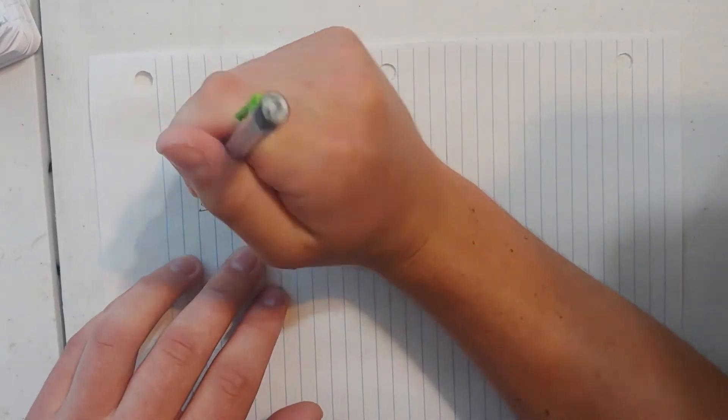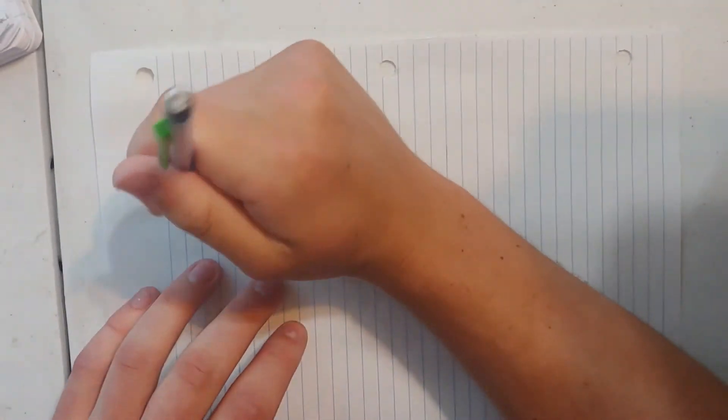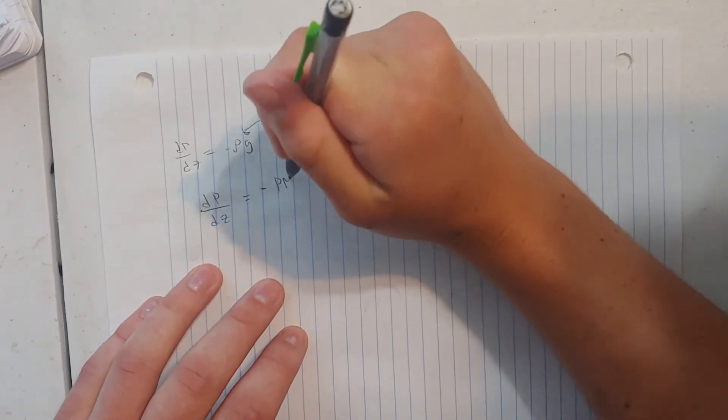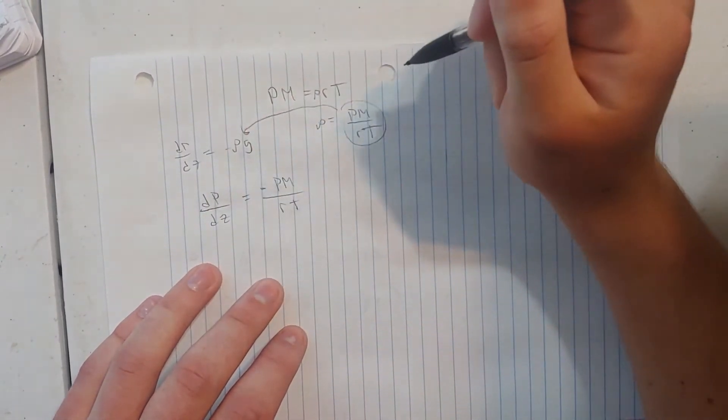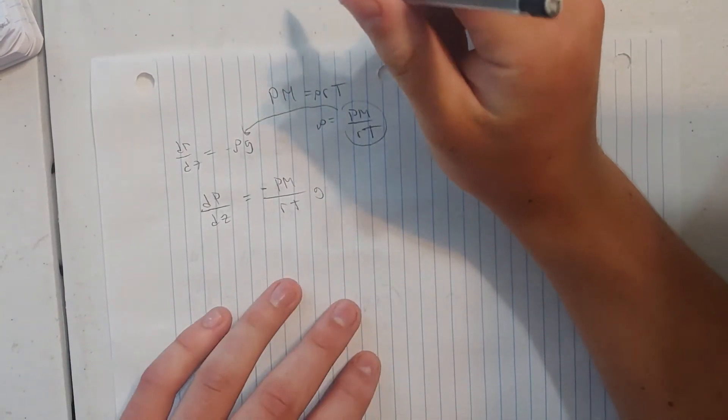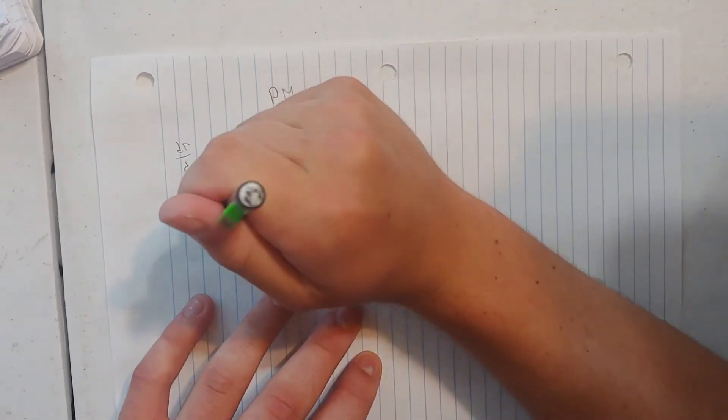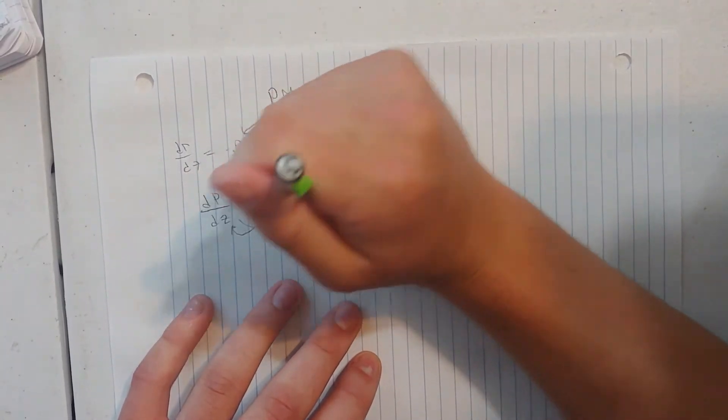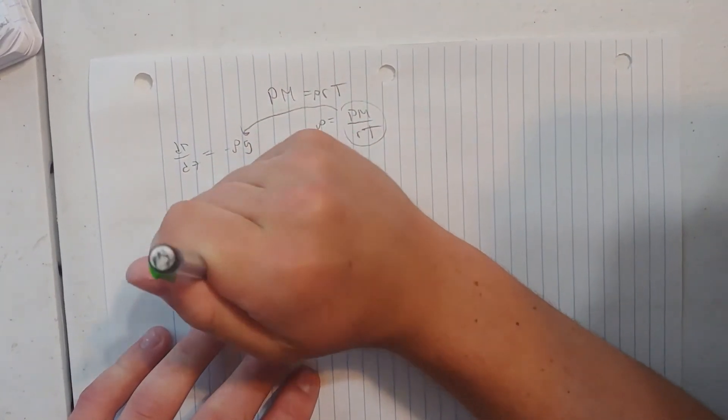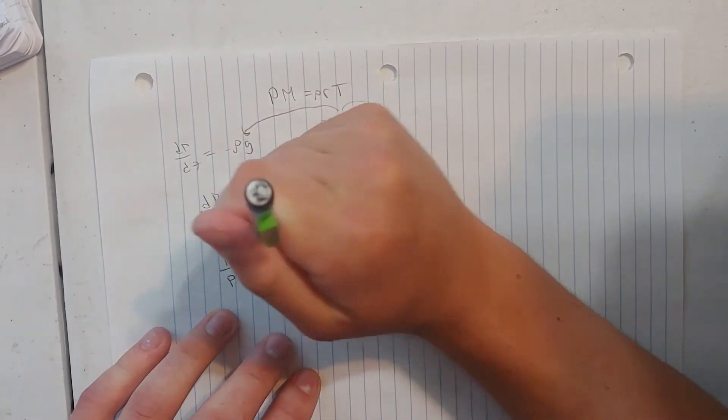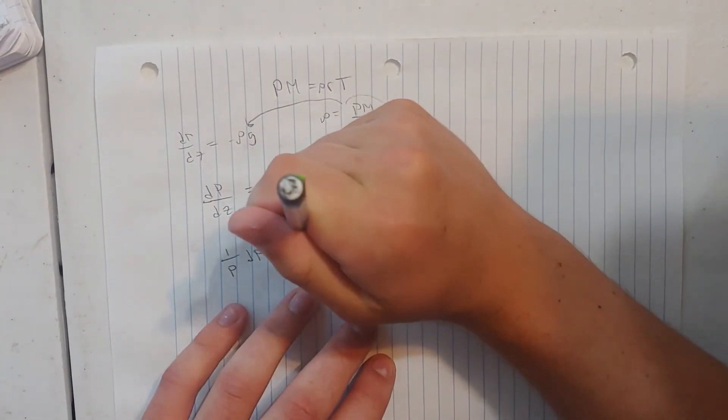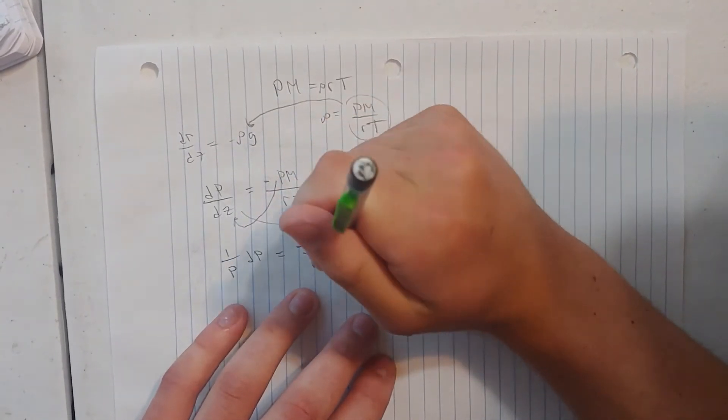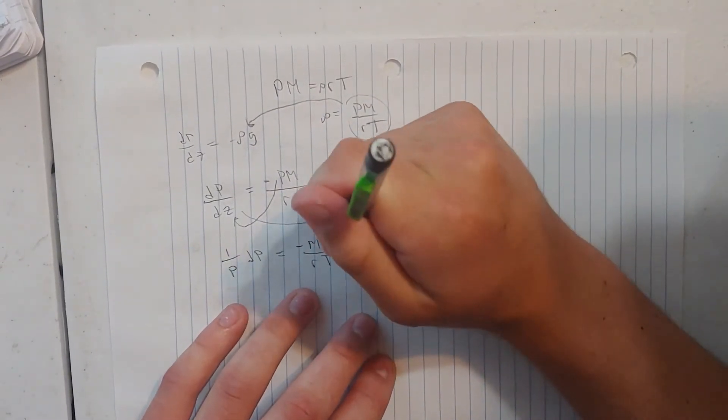And so we're going to plug that directly into our equation. So we get dp/dz equals the opposite of pressure times molar mass over RT times gravity. We're going to move our dz over by multiplying and move our pressure over by dividing. So we get (1/p)·dp equals the opposite of (mg/RT)·dz.